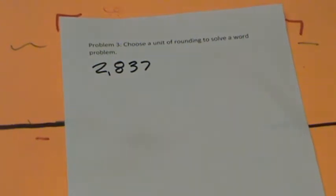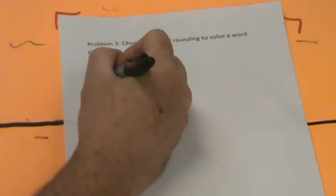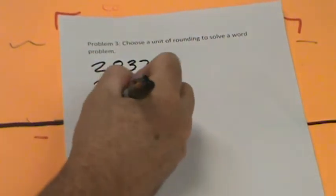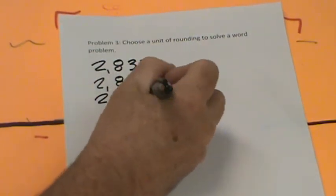So let's think about what the best way to estimate this. We're going to have 2,837, 2,837, and 2,837.